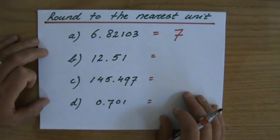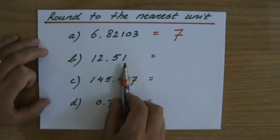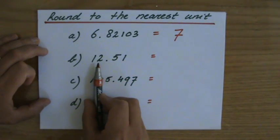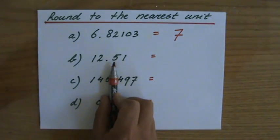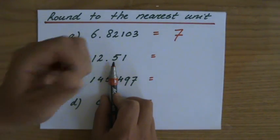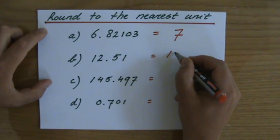To the nearest unit, I go to the correct place value, the unit, that's my two. That either stays a two or goes up to a three, that depends on the next one. It's five, it's exactly in the middle, we say it goes up. So to the nearest units, it's going to be 13.